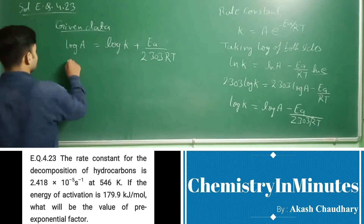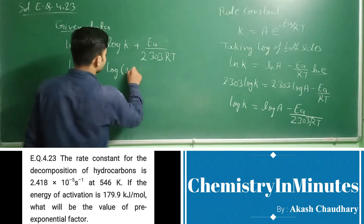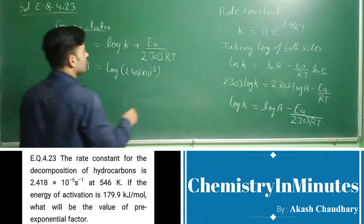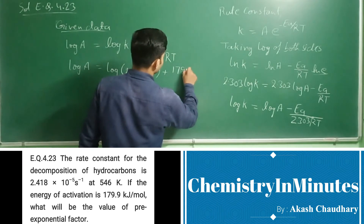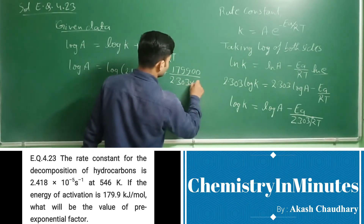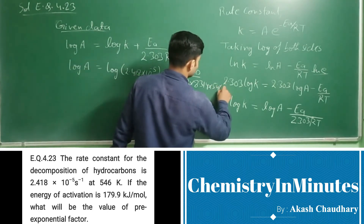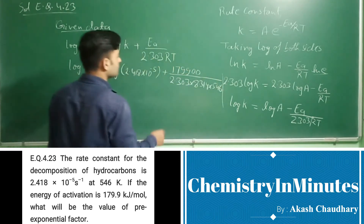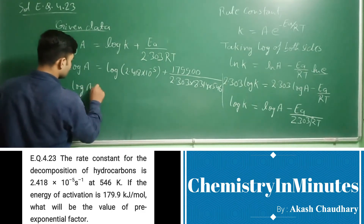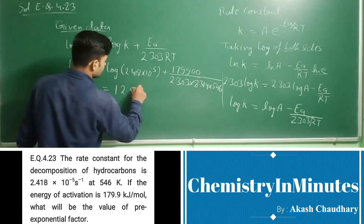Putting the values: log A equals log of 2.418 into 10 raised to the power minus 5, plus E_A which is 179900, upon 2.303 into 8.314 into 546. On solving this, log A comes out as 12.5916.